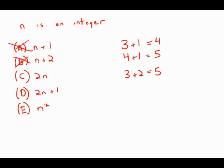Now, if I multiply by 2, 3 times 2 is 6. That's even. 4 times 2 is 8. That's even. 5 times 2 is 10. That's even. That looks very promising. But let's just check these other answers just to make sure.